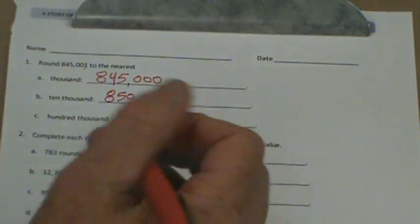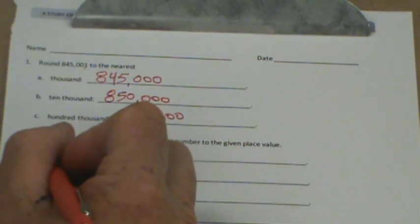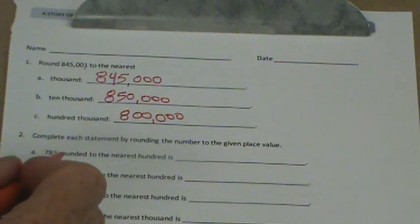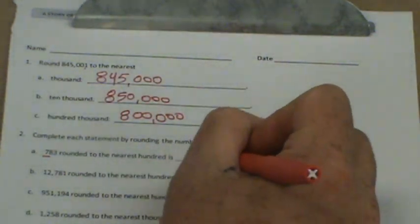Let's go to just A. 783 rounded to the nearest 100. There's my 783. Is 783 closer to 700 or 800? Well, think about it. It's 83 away from 700, but only 17 up to 800. Plus it's greater than the midpoint of 50. So we would round up to 800.